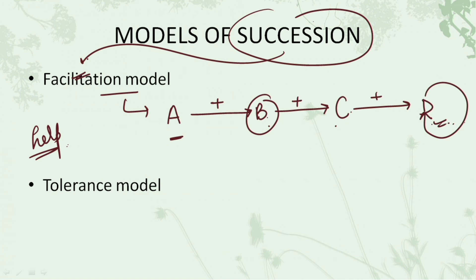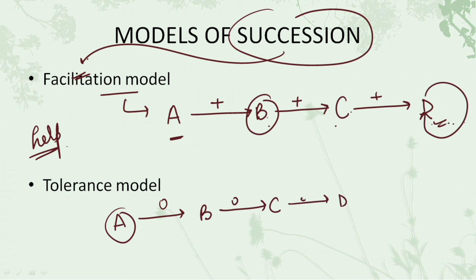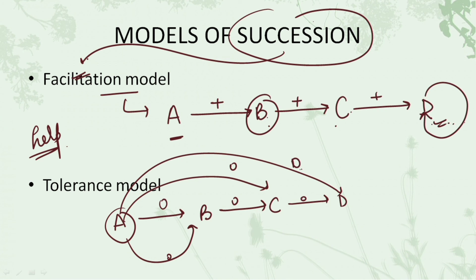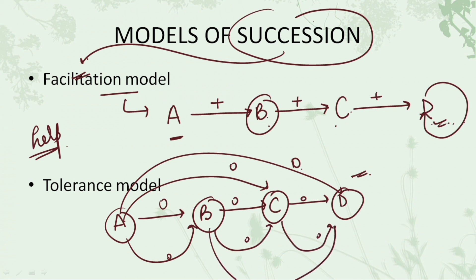The second model is the tolerance model. In the tolerance model, when the first species is present, the arrival of the second species neither positively nor negatively affects it — they are all neutral to each other. Species A is not affected by B arriving, not affected by C arriving, and not affected by D arriving. No species gives a positive or negative impact to any other. Any species can start succession at any time, and no one has any impact on the other. Everyone remains neutral.